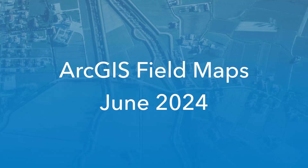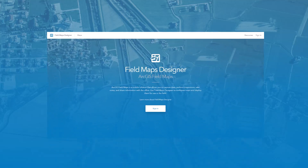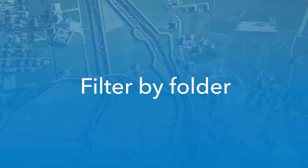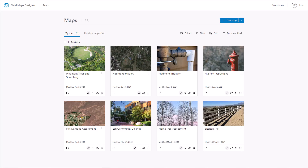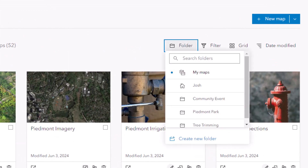The June 2024 release of ArcGIS Field Maps includes updates to help streamline the experience of preparing maps for the field in Field Maps Designer. Let's take a look. When viewing the Maps page, you can now filter maps by folders within your ArcGIS organization. This is helpful for viewing maps relevant to a specific project.